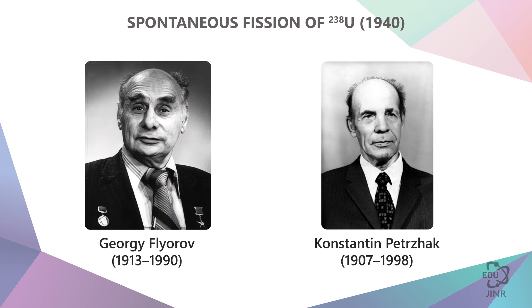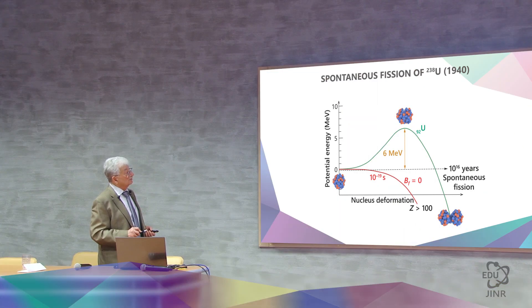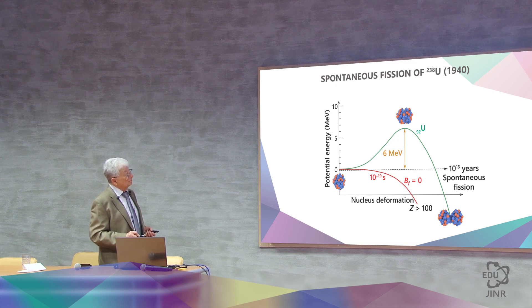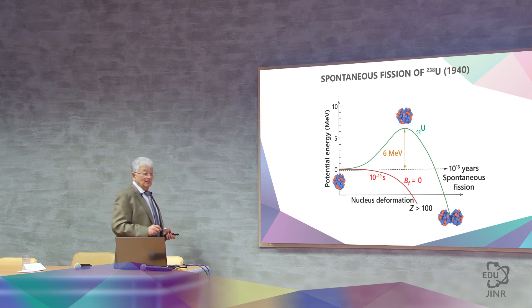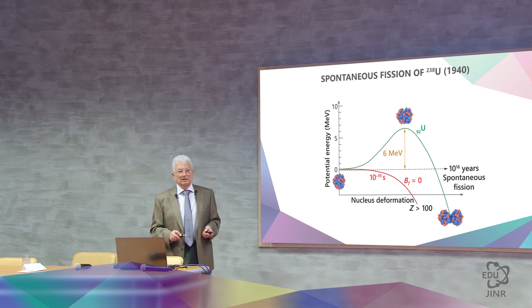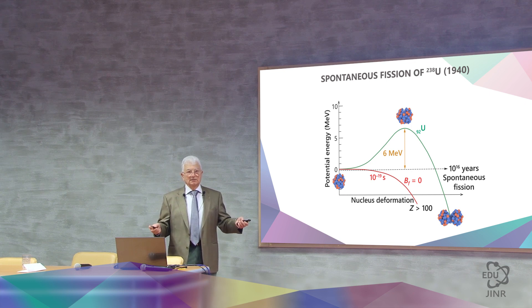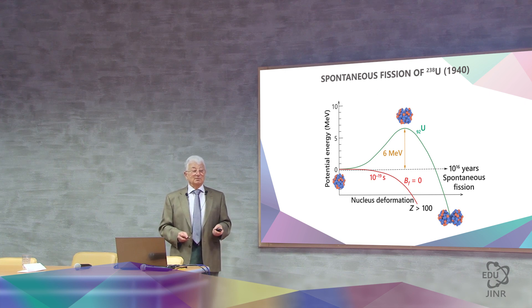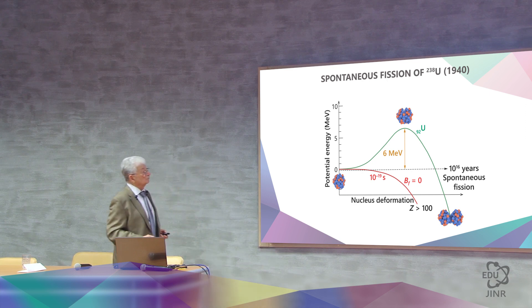They were looking for spontaneous fission, which was first discovered by Georgi Nikolaevich Flerov and Konstantin Antonovich Petrzak, who were working in Leningrad at the Physics and Technology Institute at the time. And they showed that, in fact, uranium tunneling through this 6 mega electron volt barrier takes 10 to the power of 16 years. How it was done is a separate story, and I don't want to take up too much of your time, even though the story is quite interesting. But nevertheless, by the 40th year it was already clear that the uranium was undergoing spontaneous fission, and this spontaneous fission could be observed if one had sensitive enough equipment.